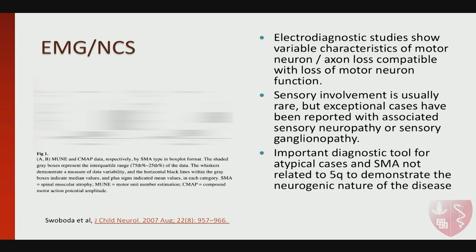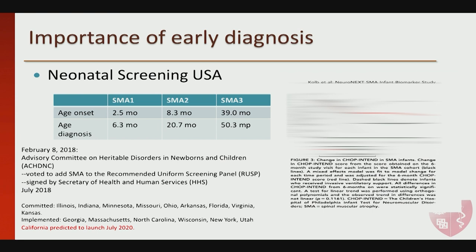Early diagnosis is critical — the earlier the diagnosis, the better the outcome. For type 1 and type 2 patients, the age of symptom onset is between 2.5 and 8.3 months, and the age of diagnosis is certainly delayed. We are expecting neonatal screening to dramatically change this. We are expecting to launch our program in California around June or July 2020.